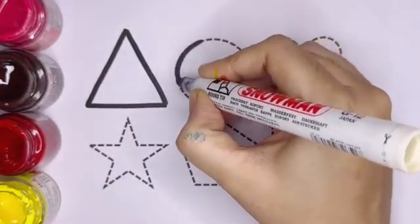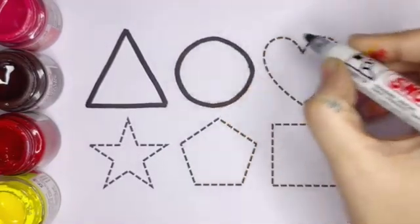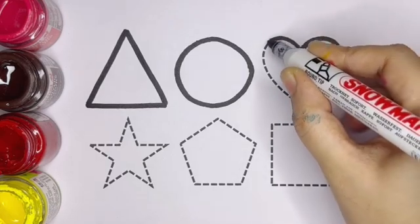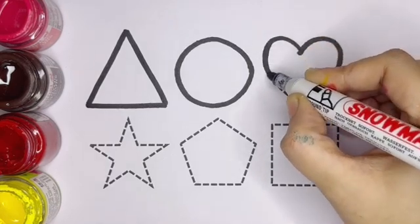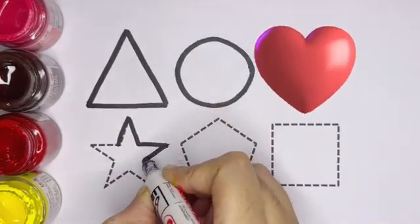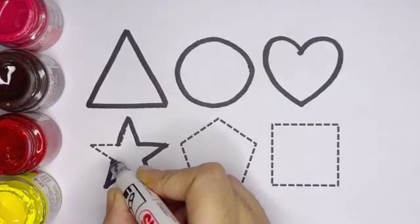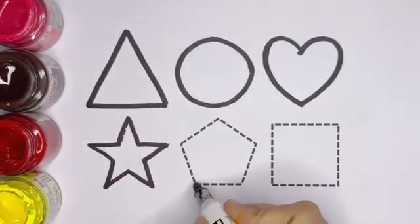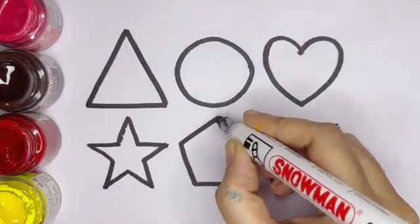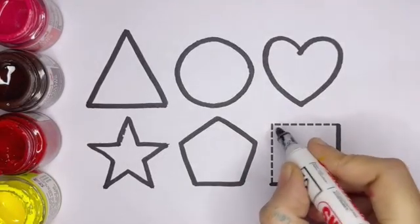Circle, this shape is called circle. Heart, this is heart. Next is star, this is star. Pentagon, this shape is called pentagon. Square, this is square.